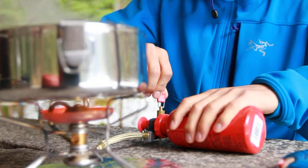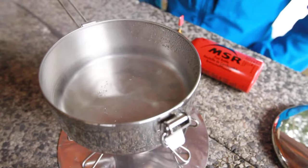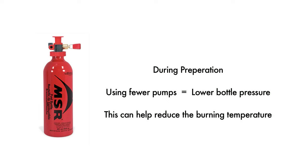To simmer on your MSR liquid fuel stove, turn down the pump control valve to lower the heat. The flame intensity is dictated by the pump control valve in conjunction with the pressure of the bottle. In some cases, to achieve optimal simmering, you may need to pump your fuel bottle fewer times during preparation. This creates lower pressure in your fuel bottle.